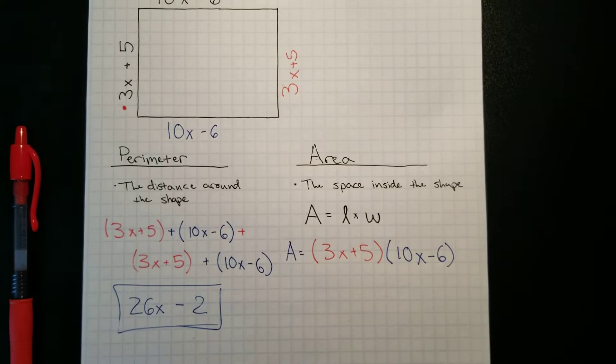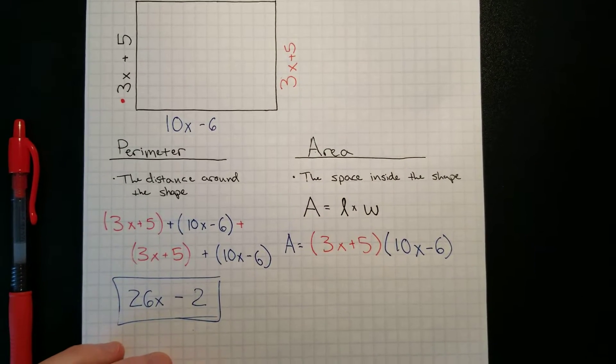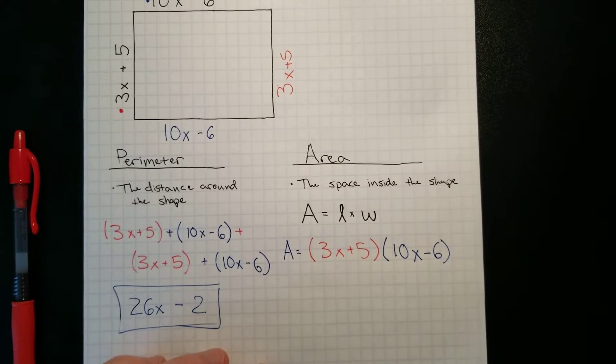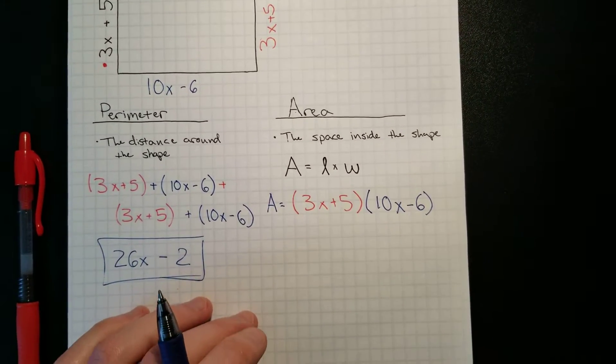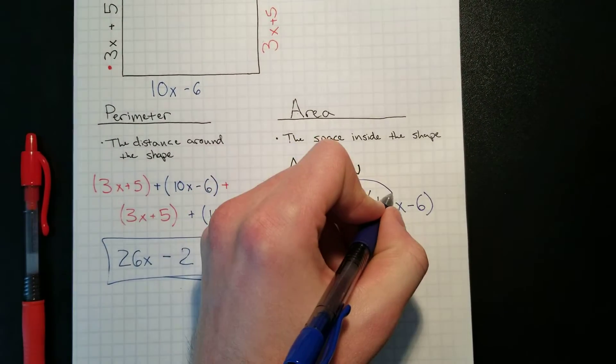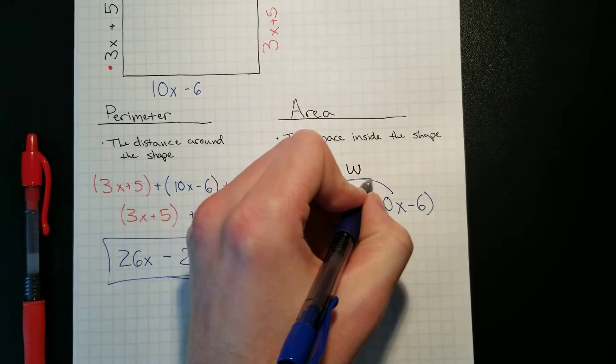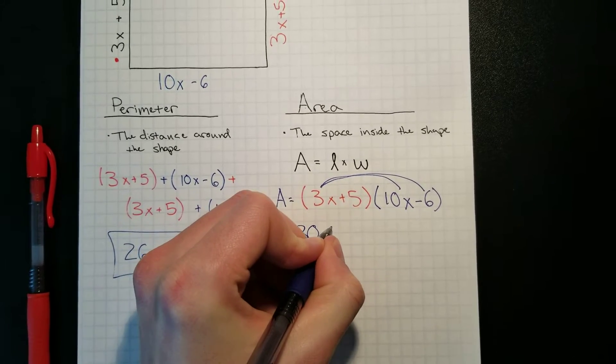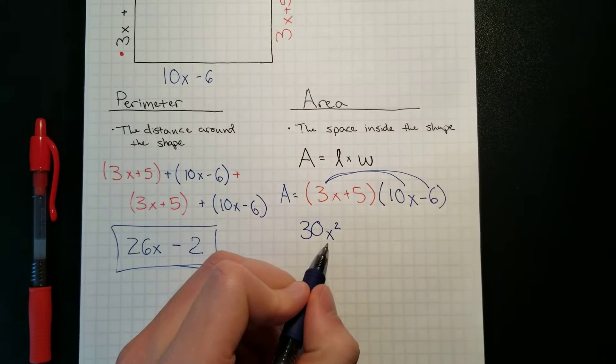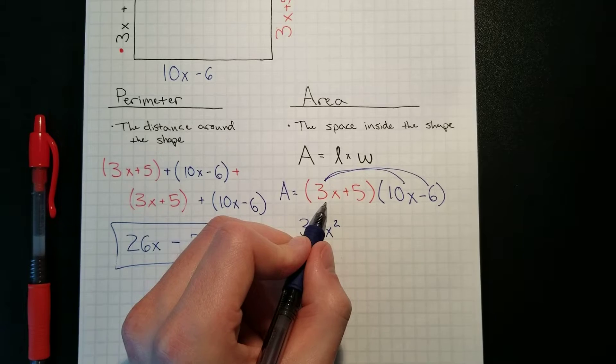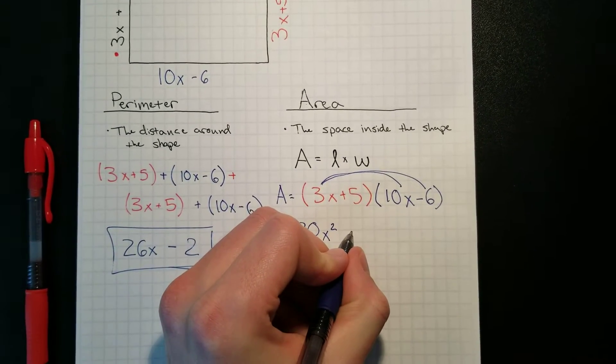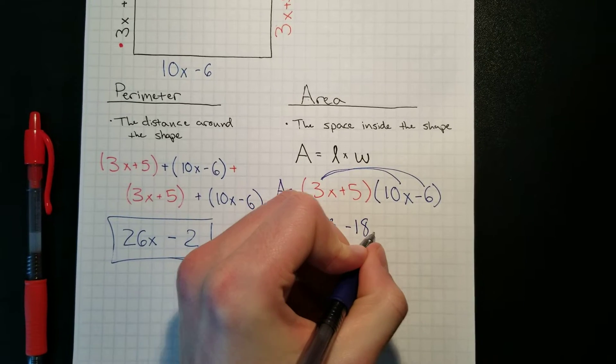So this problem is a multiplication problem, and that means that we're going to be distributing both terms twice. So to multiply, we do the 3x times the 10x and the 3x times the negative 6. 3x times 10x is 30x squared—remember x times x is x squared. 3x times negative 6 is next, so 3x times negative 6 is negative 18x.